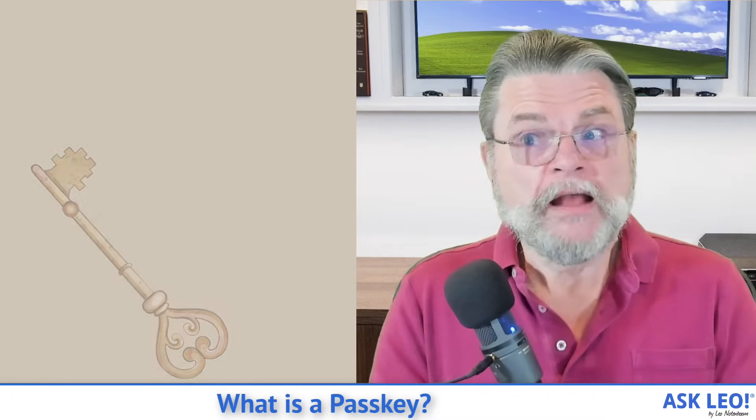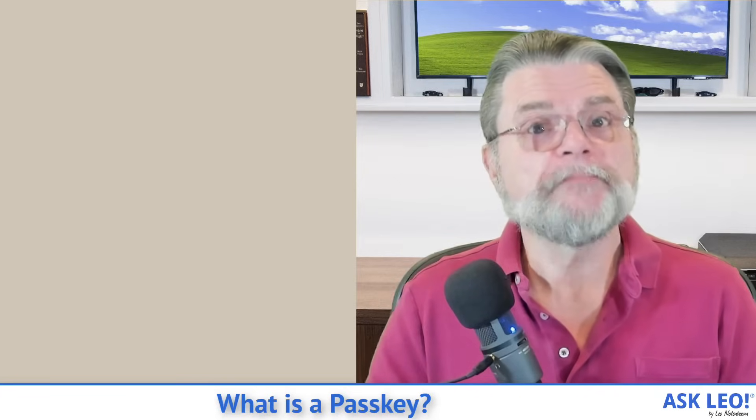Call them A and B. Anything you encrypt using A can only be decrypted by B. Similarly, anything encrypted using B can only be decrypted using A. In fact, if you encrypt something with A, you can't even use A to decrypt it — you can only use B. So they are asymmetrical: you use one to encrypt and you decrypt with the other. I find it absolutely fascinating mathematical magic.